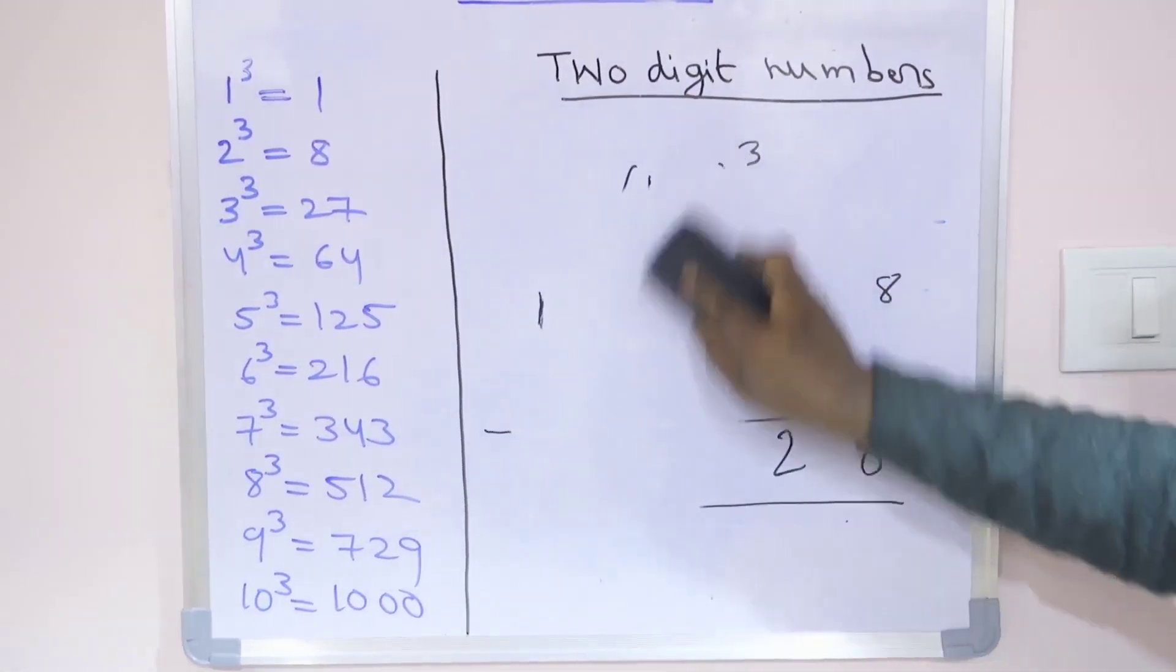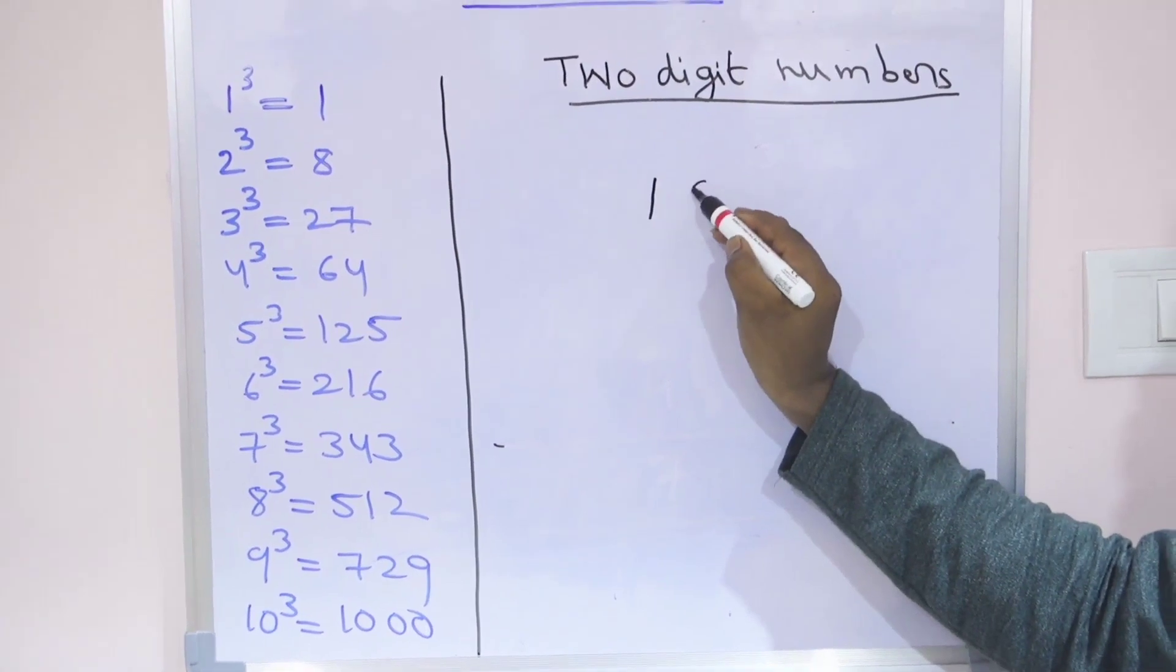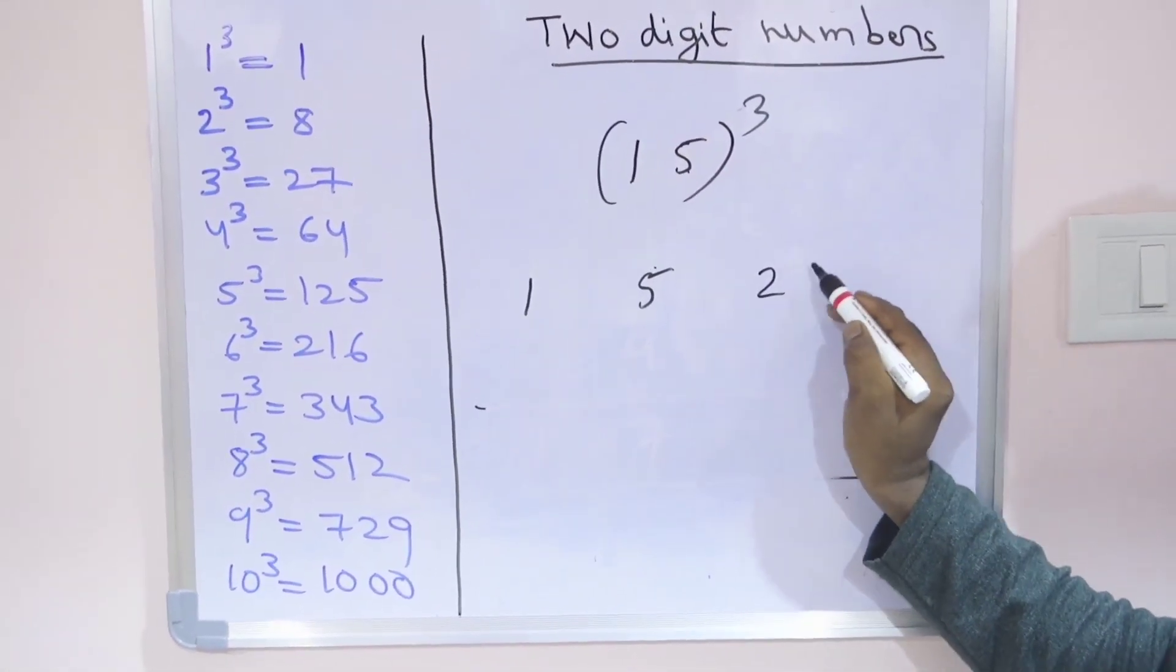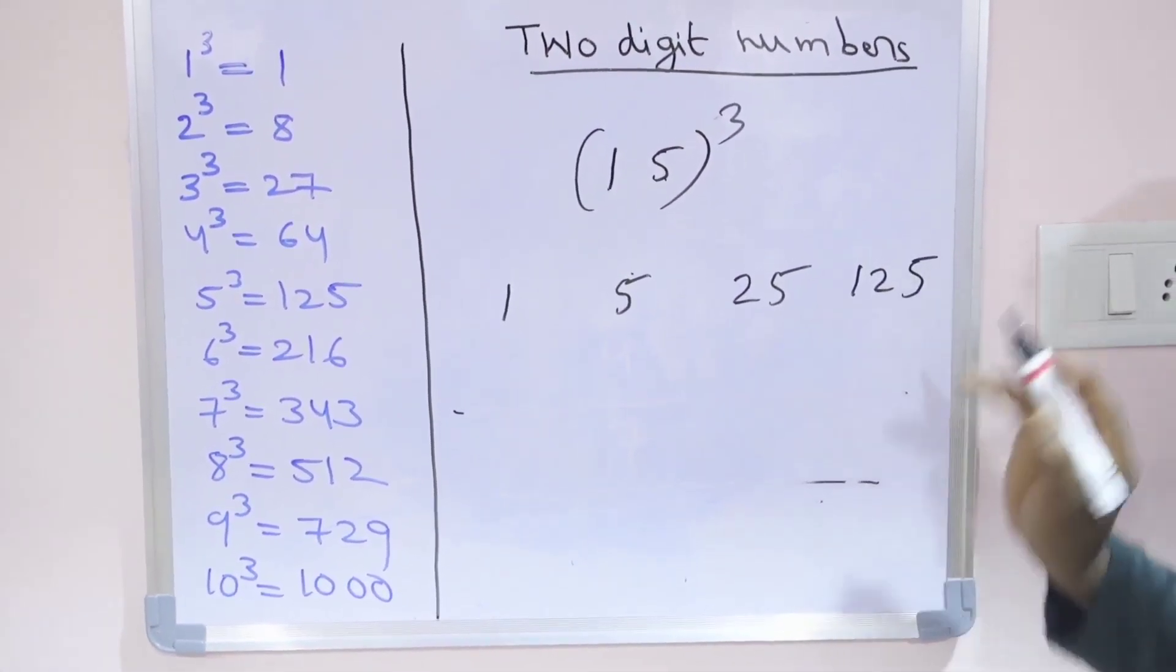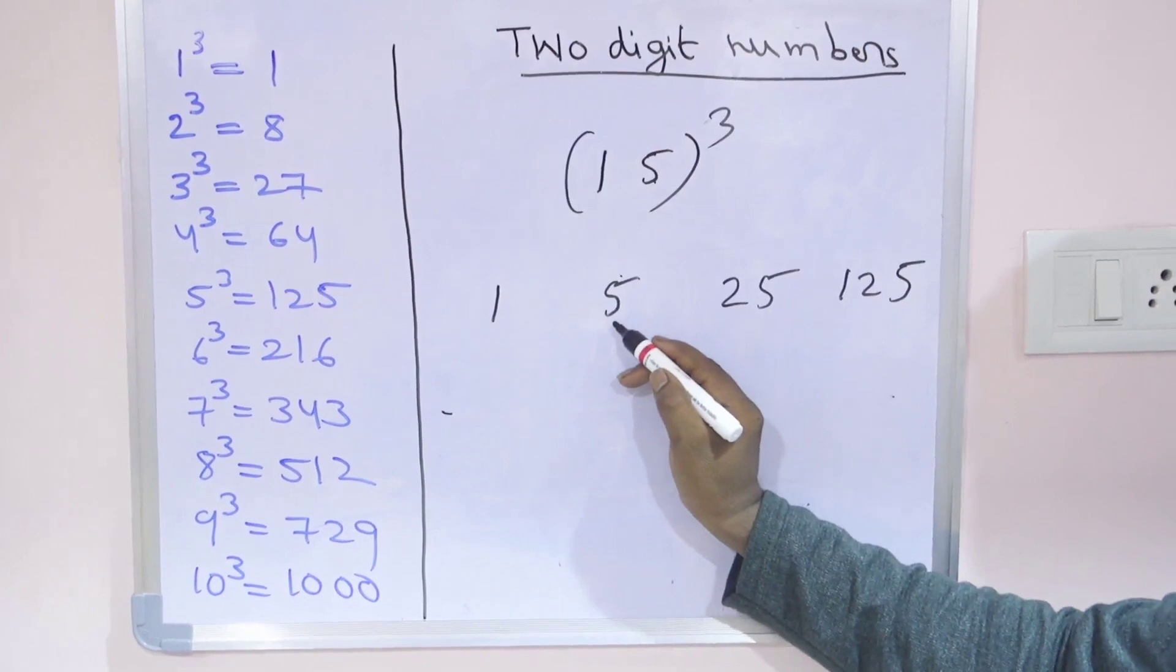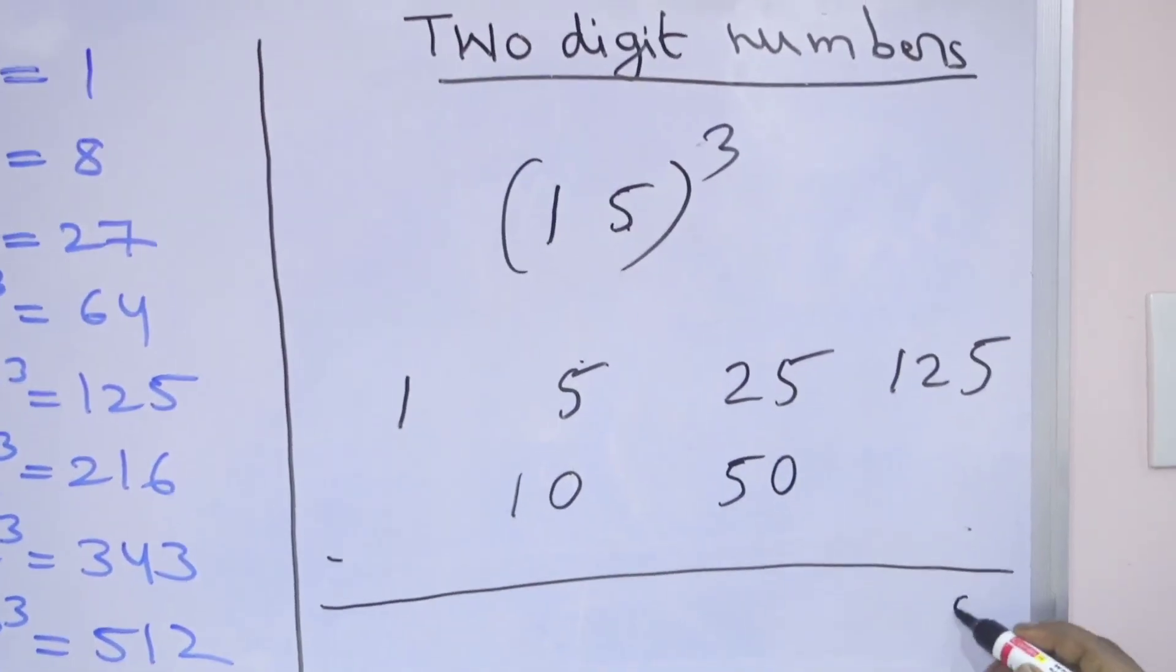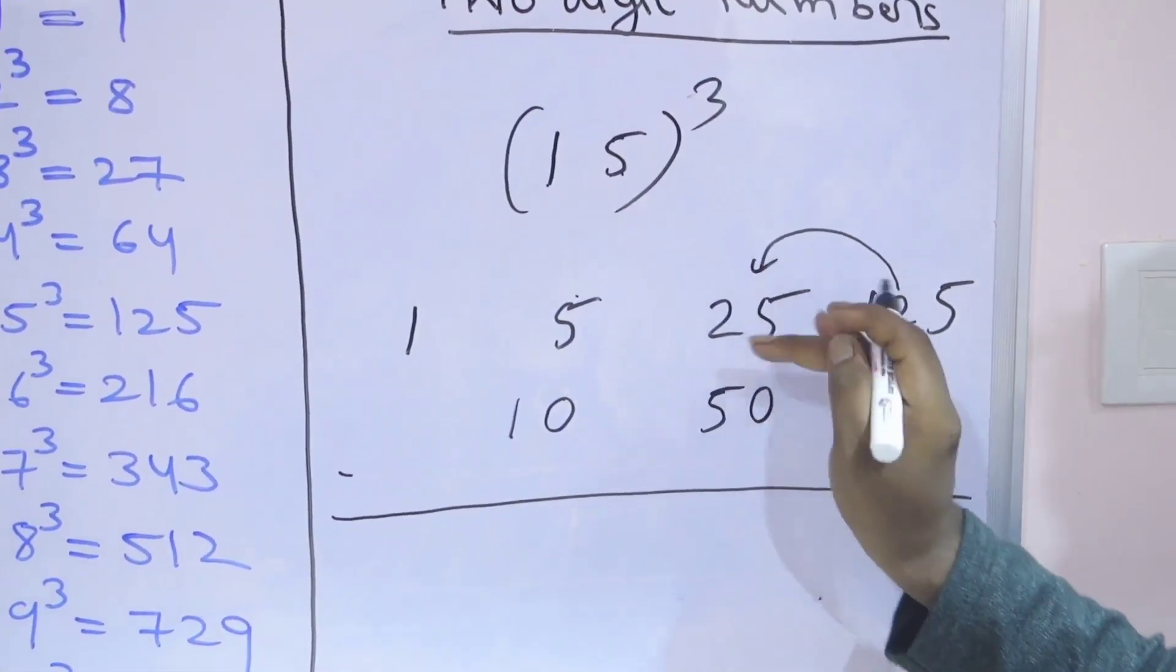Same method for starting with 1. Suppose I'm taking 15 cube. First write 1 here. 5 times 1 is 5, 5 times 5 is 25, 5 times 25 is 125. Next step: double the middle numbers. 5 double is 10, 25 double is 50. Next, add. First, only the last number 5. This 12 is added to this number here.